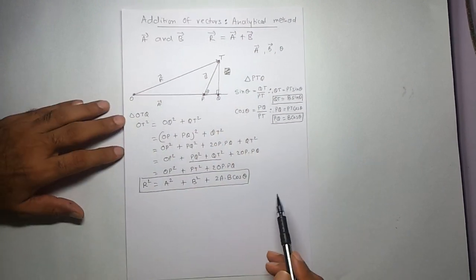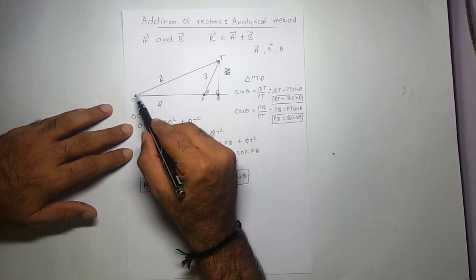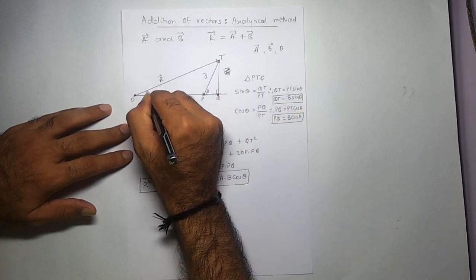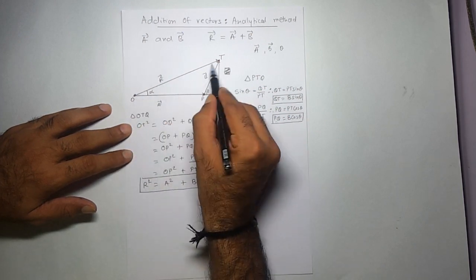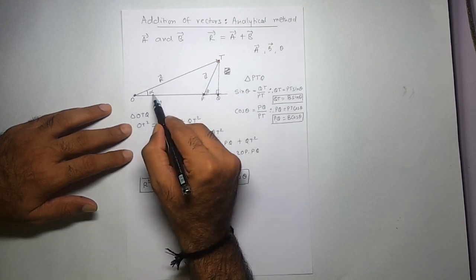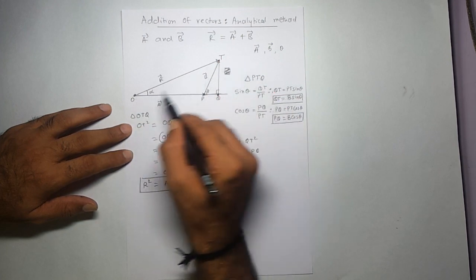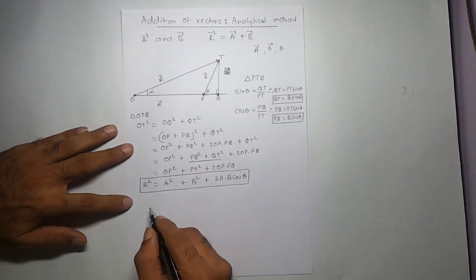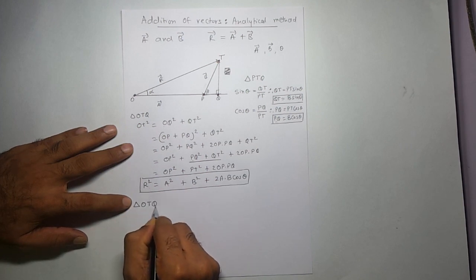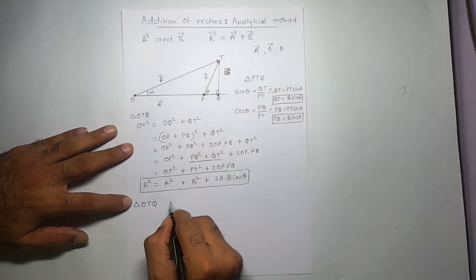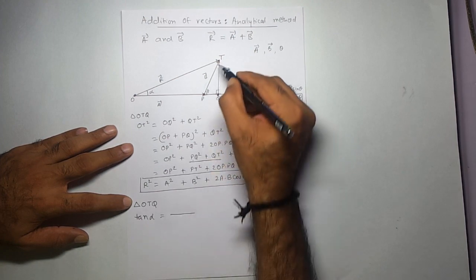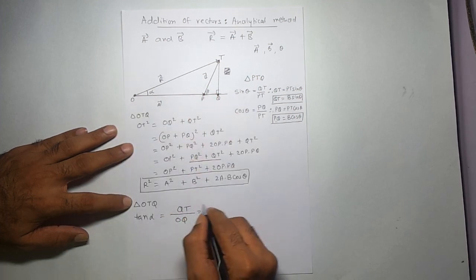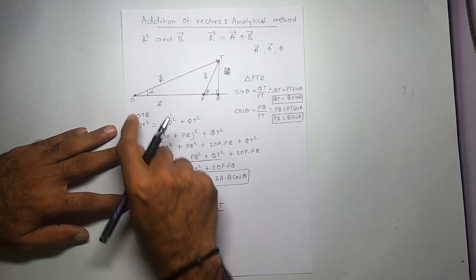We have found the magnitude of vector R in terms of three known quantities: A, B, and theta. Now let's shift attention to the direction of the resultant. I want to find angle alpha — the angle which the resultant makes with vector A. If I know alpha I can find the direction of R, since I know the direction of A. Let's focus on triangle OPQ.